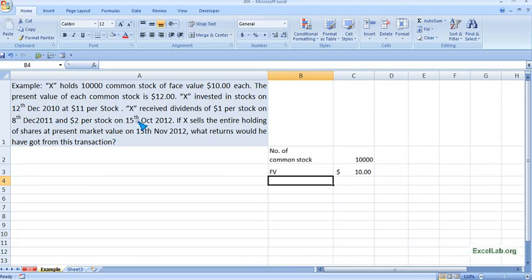The purchase price is $11, and subsequently X receives dividends twice: $1 per stock on 8th December and $2 per stock on 15th October 2012. Then X sells the entire holding on 15th November at $12 per share. What is the return on this investment?